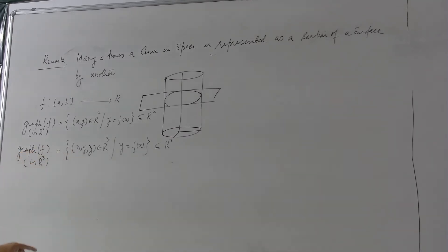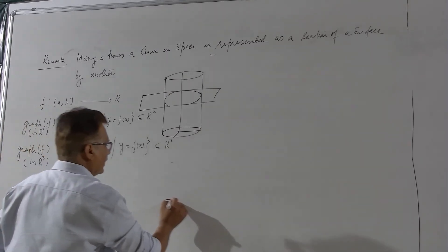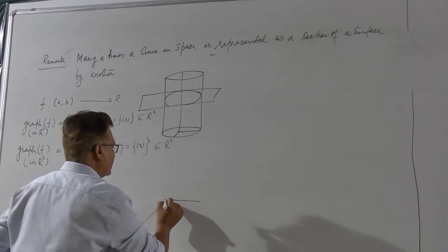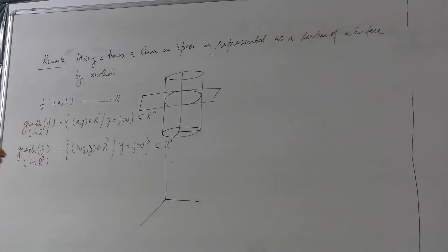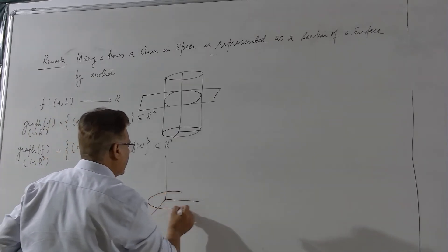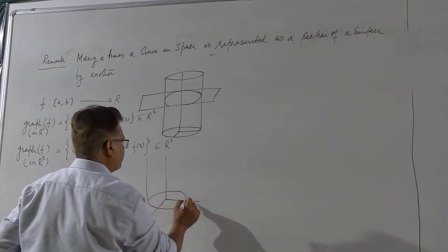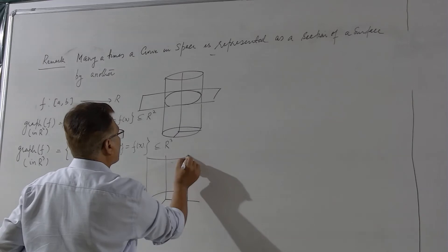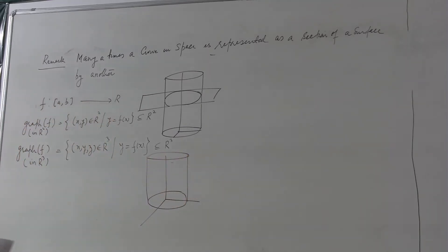So what will happen is that you have in xy plane the circle and z is freely moving with all the points, so it will generate a cylinder. Not really like this, it will be a cylinder of this kind.